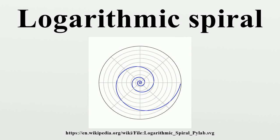The size of the spiral increases but its shape is unaltered with each successive curve, a property known as self-similarity. Possibly as a result of this unique property, the spira mirabilis has evolved in nature, appearing in certain growing forms such as nautilus shells and sunflower heads.